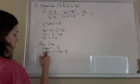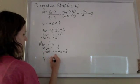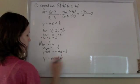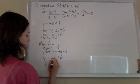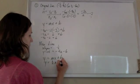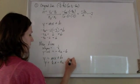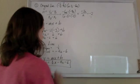And so once we have the slope and the y-intercept, we can just plug that into our slope-intercept form, y equals mx plus b. So y will equal 1 half x minus 4a minus 6, and that is our answer.